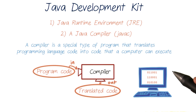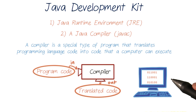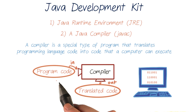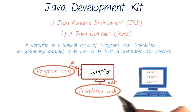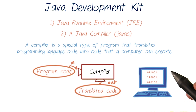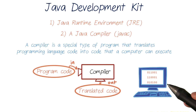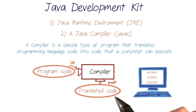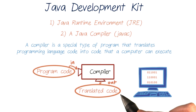Computers at their most basic level only react to electronic signals, and so seeing code like a println statement doesn't mean much to them. The code developers write has to be translated into machine code, which is usually a series of zeros and ones that our computer circuitry can respond to. And a compiler is the first step in translating our Java code into machine code.